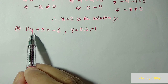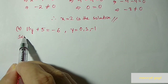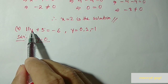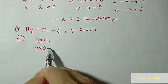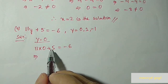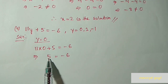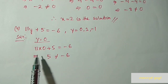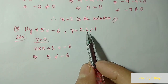Next, question number 2 part 2. The equation is 11y + 5 = minus 6, and three values of y are given. We put y equal to 0: 11 into 0 plus 5 equal to minus 6. Zero into 11 is 0, so we get 5. Left hand side is 5 and right hand side is minus 6 — not equal. So y equal to 0 is not the solution.